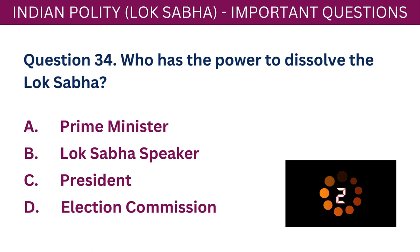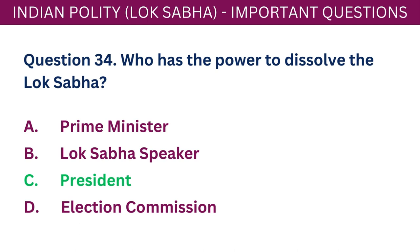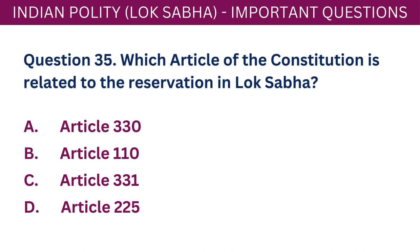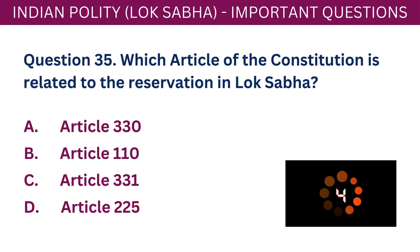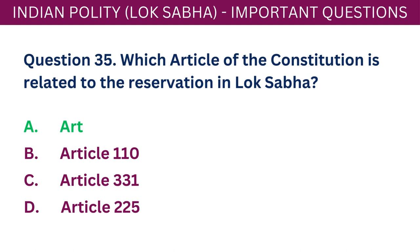Question 35: Which article of the Constitution is related to the reservation in Lok Sabha? A. Article 330. B. Article 110. C. Article 331. D. Article 225. The correct answer is A - Article 330.